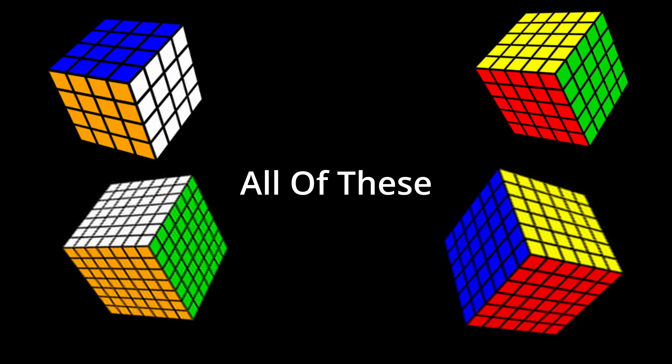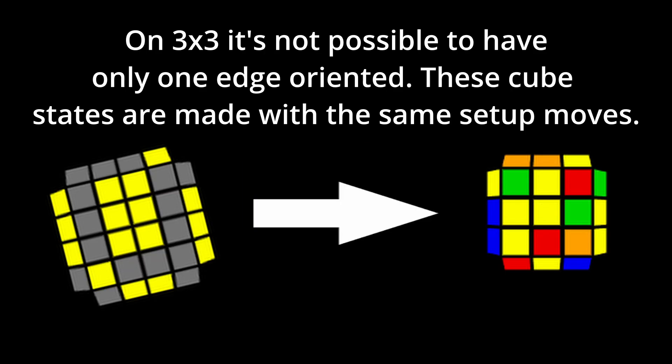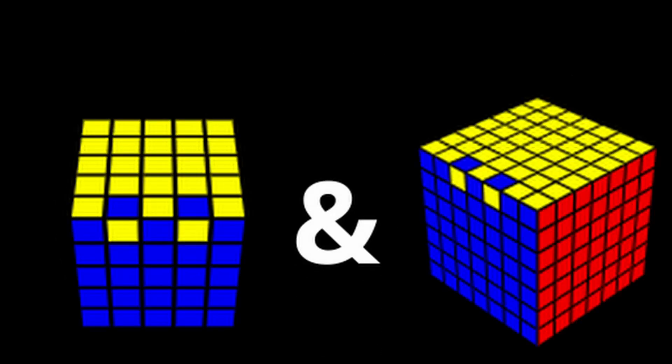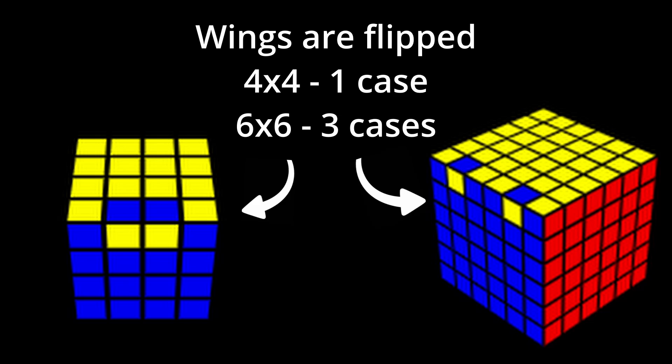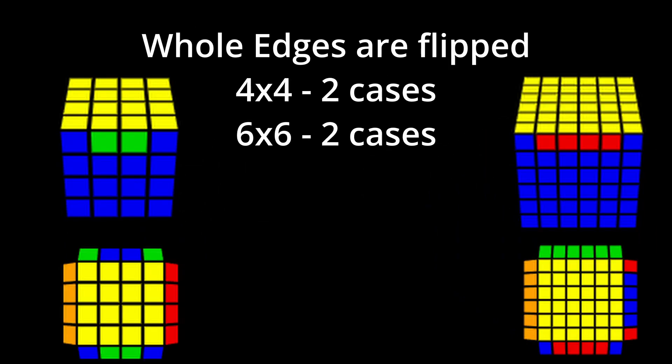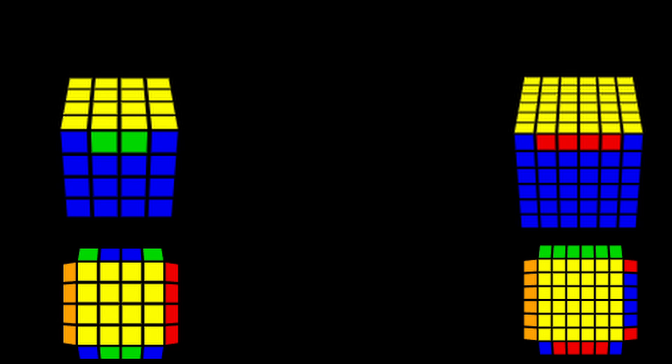On every single big cube, there's a thing called parity, which is a case that you can get which is unsolvable on a normal 3x3. On 5x5 and 7x7, there's just one type of parity where edges are flipped. But on 4x4 and 6x6, you can also get something where two edges have to swap as well. In this video, I'll be showing you algorithms for every single big cube.